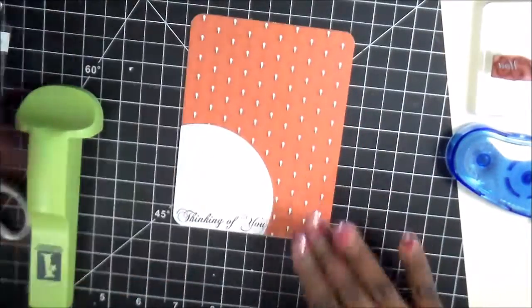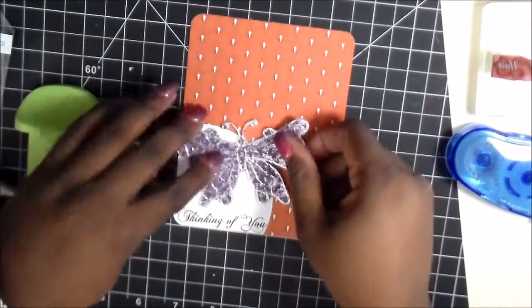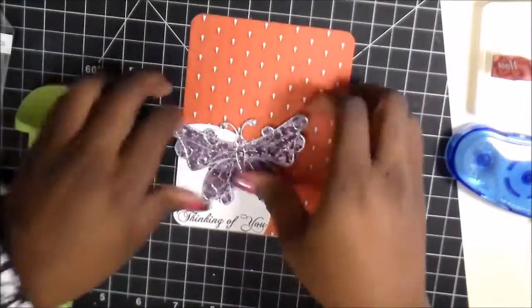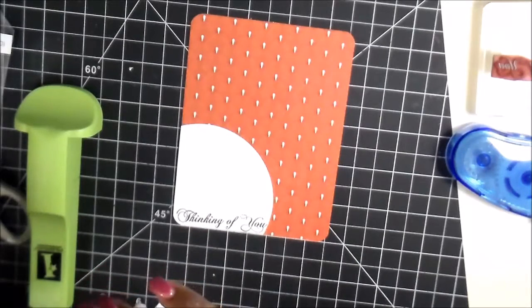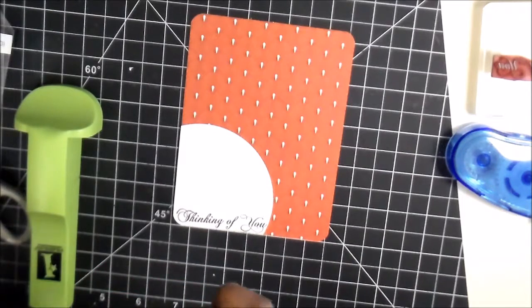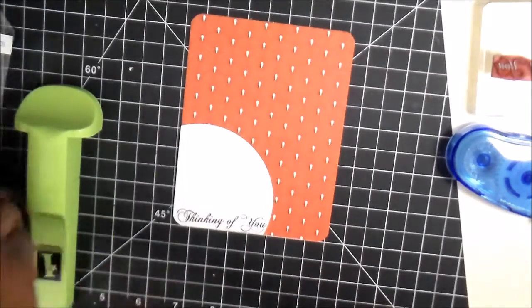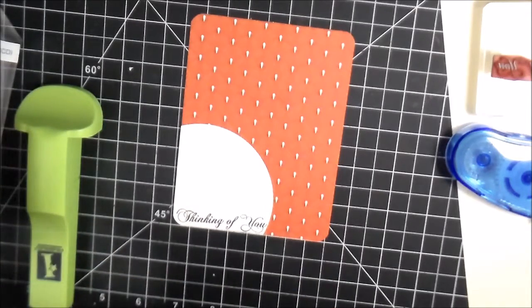It's an oldie but goodie, people. I'm telling you. If you don't have one, get you a Stampin' Majig. It doesn't hurt to have and you can have it and the Misti tool and it'll work great at different times. When you don't want to pull out the Misti, the Stampin' Majig will always work.